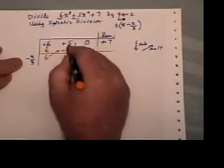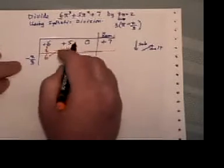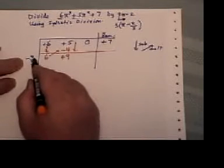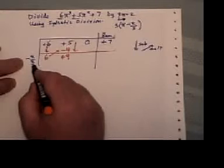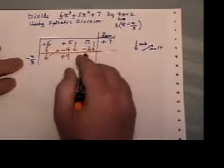Now we subtract. 5 subtract negative 4 is plus 9. Now I'm going to multiply this times that. Negative 2 times 9 is negative 18 divided by 3 is negative 6.